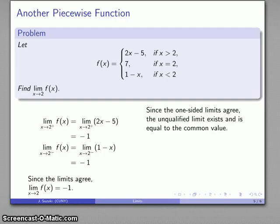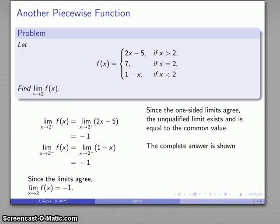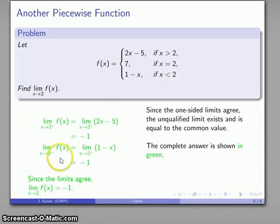Note that in this particular case, the question didn't ask for numerical support, so we didn't provide it. But we were asked to find the limit as x approaches 2. The complete answer is the portion shown in green: finding the limit from above, the limit from below, and the observation that the two limits are the same — so the limit itself equals the common value.